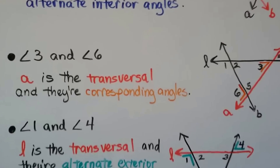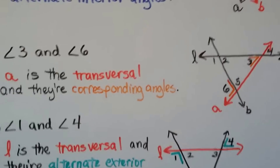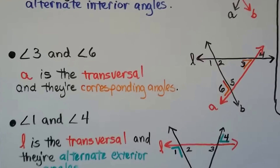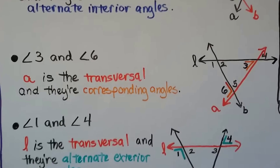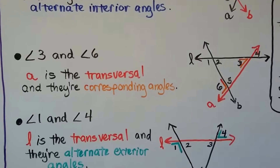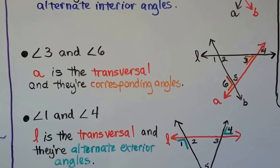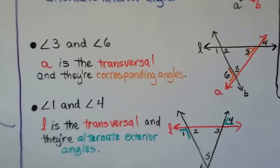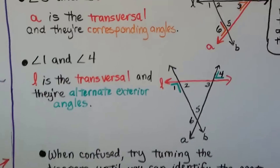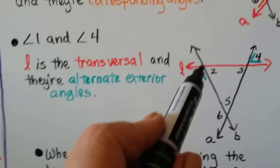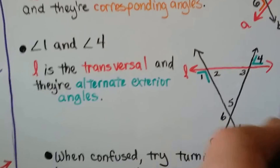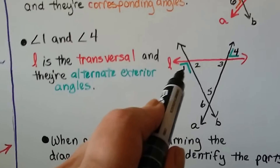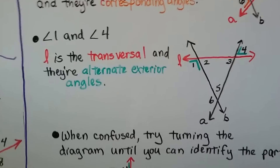For angles 3 and 6, the vertices both share line A, making line A the transversal. They're on the same side of the red transversal and both beneath the lines — beneath line L and beneath line B — so they're corresponding angles. For angles 1 and 4, they share line L as the transversal. They're on opposite sides of the transversal, with angle 1 outside line B and angle 4 outside line A, so they're alternate exterior angles.